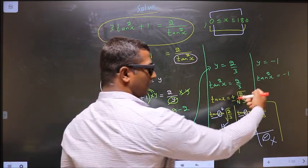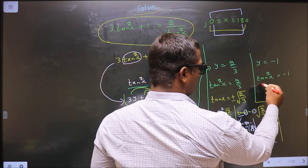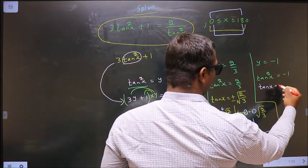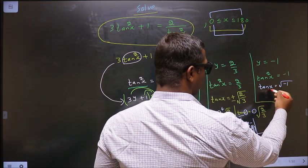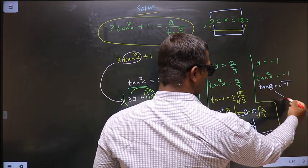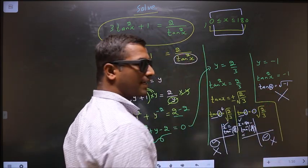Now here to get tan x, you shift square to the other side. We get square root of minus 1. I cannot get the values for x. So this we just neglected.